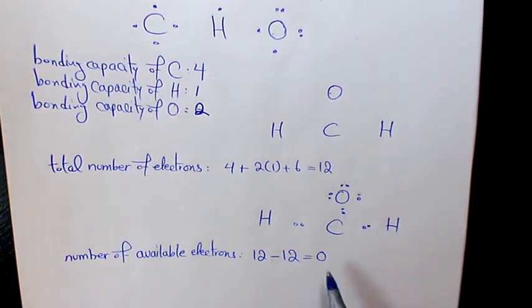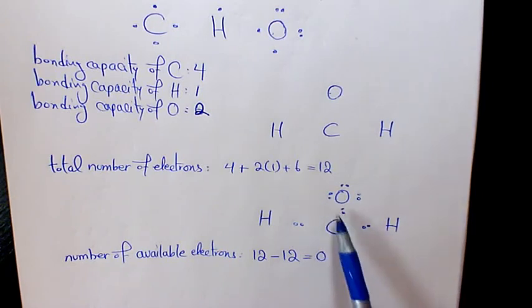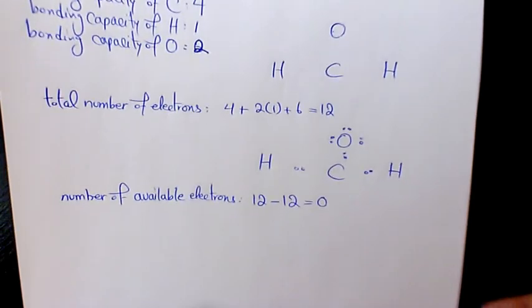So what we need to do here, we don't have any available electron, but since it doesn't have a full octet, we need to move lone pair from oxygen to the carbon in order to have octet rule for full octet for carbon.